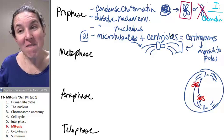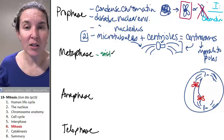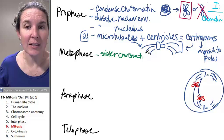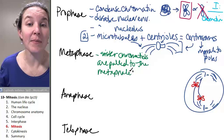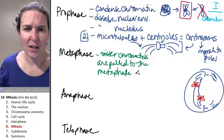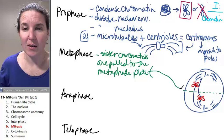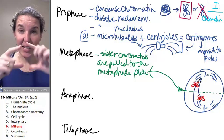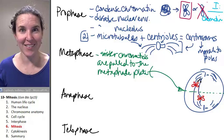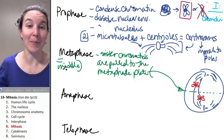And in metaphase, the chromosomes, the sister chromatids, are pulled to the metaphase plate or the equator of the cell. This is my metaphase plate. So my sister chromatids are jostled around until they line up nicely in the middle. Metaphase in the middle. That's how I remember.